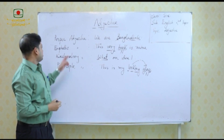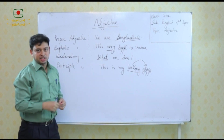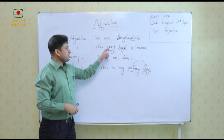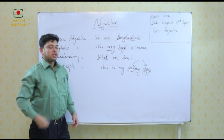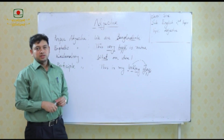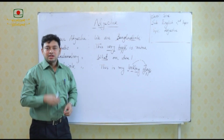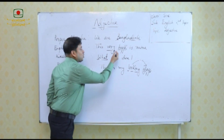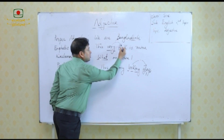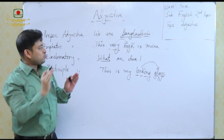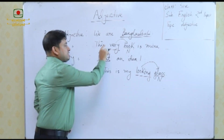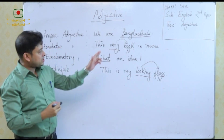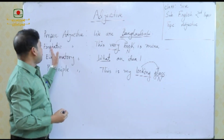Another adjective is emphatic adjective, also known as emphasizing adjective. For example: This very book is mine. If I say 'this book is mine' it is correct, but saying 'this very book' gives more stress on 'book'. The word 'very' is qualifying the noun 'book' and adding emphasis, so it becomes an emphatic adjective.